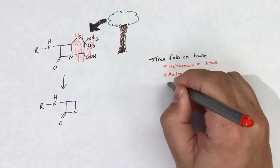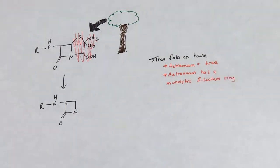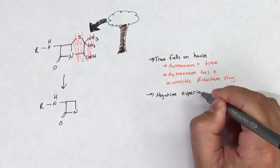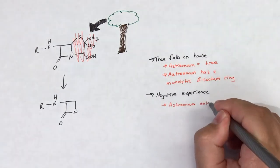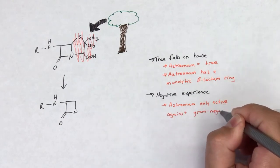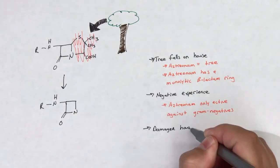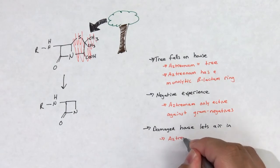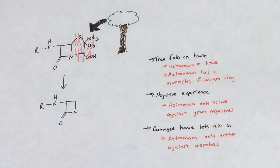The tree is aztreonam and it falls into a part of your house, only leaving the beta-lactam ring. The negative experience comment will help you remember that aztreonam is only effective against gram-negative bacteria. Lastly, the air comment will help you remember that aztreonam is only effective against aerobes.